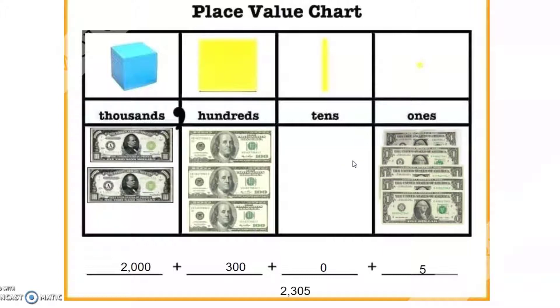When we put that number all together, we cannot leave the placeholder out, and we have a total value of two thousand three hundred five.